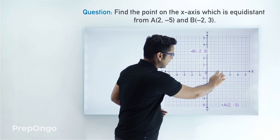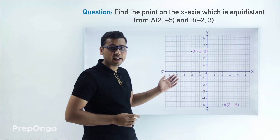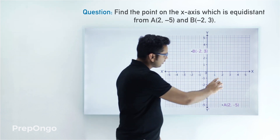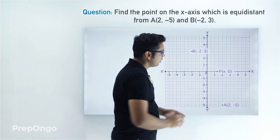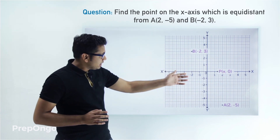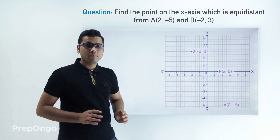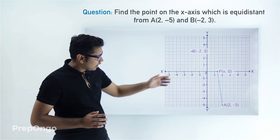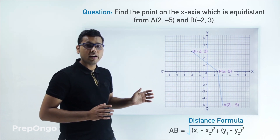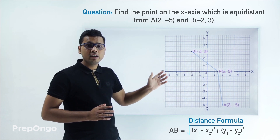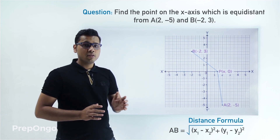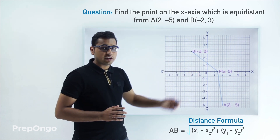...you will find that if a point is on the x-axis it lies somewhere on this line, and its y-coordinate will be 0. So let's say the point P is somewhere here, so its coordinates become (x, 0). Now we can find the distances PB and PA using the distance formula. We know that PA and PB will be equal, so by equating them we can find the coordinates of point P.